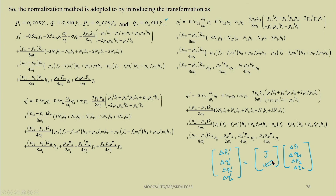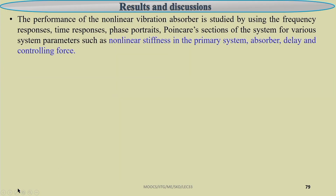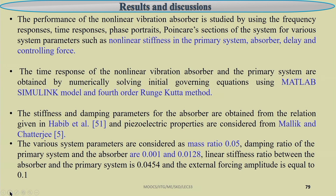By finding the eigenvalues of the Jacobian matrix we can find the stability of the system. If the eigenvalues are on the left-hand side of the S-plane (negative real part), the system is stable; if on the right-hand side, the system is unstable. This way we can study the stability for different system parameters.